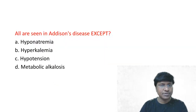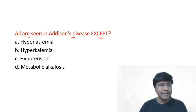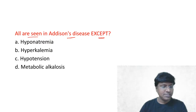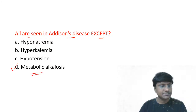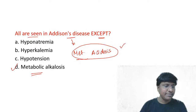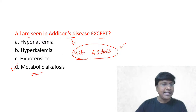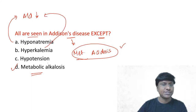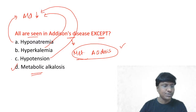Next easy question: all are seen in Addison's disease except — hyponatremia, hyperkalemia, hypotension, metabolic alkalosis. What you will not see is metabolic alkalosis. In Addison's disease, you will see metabolic acidosis. Hyponatremia, hyperkalemia, and hypotension are all due to aldosterone deficiency — aldosterone deficiency causes sodium loss, potassium retention, and reduced blood pressure.